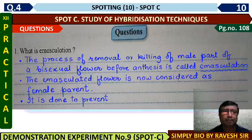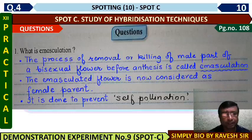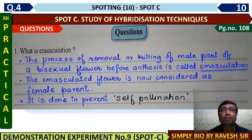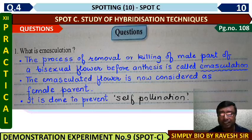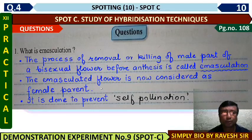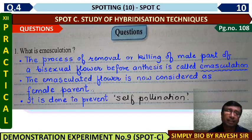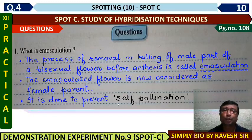What is emasculation? Emasculation is the removal or killing of the male part of the bisexual flower before anthesis — before the maturity of the anther. When this condition happens, it becomes emasculation. The emasculated flower is then considered as a female parent. This prevents self-pollination.